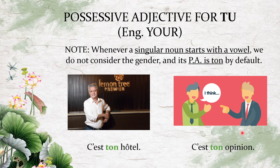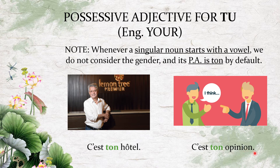The same vowel rule applies: when you want to say 'your' and the singular noun starts with a vowel, you straight away use 'ton' — you don't consider the gender. So 'c'est ton hôtel' — this is your hotel — because 'hôtel' is singular and starts with a vowel. Note that H is also considered a vowel and is silent. 'C'est ton opinion' — this is your opinion — because 'opinion' is singular starting with the vowel O. Similarly, for 'my': 'c'est mon hôtel' and 'c'est mon opinion.'